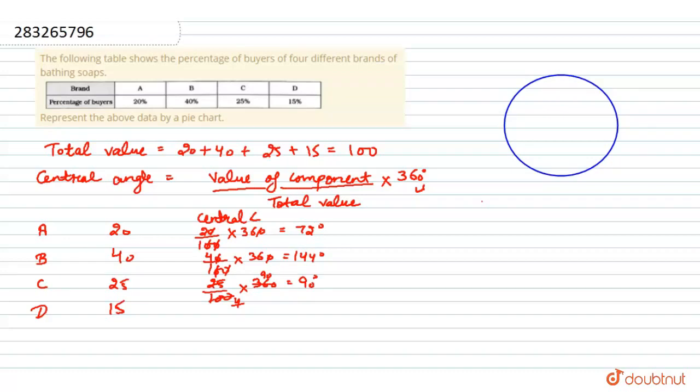For D, we have 15 divided by 100 into 360. That gives us 54 degrees.